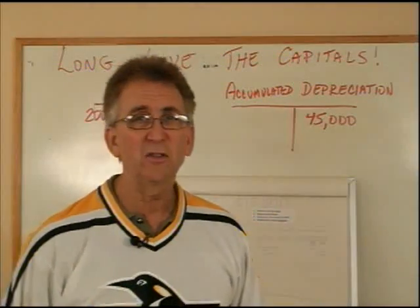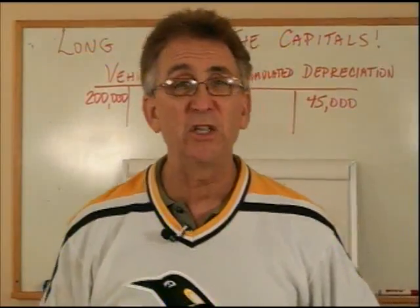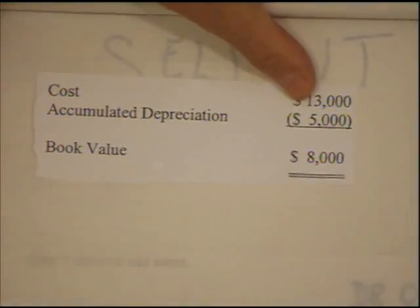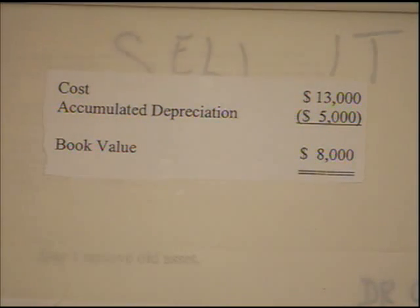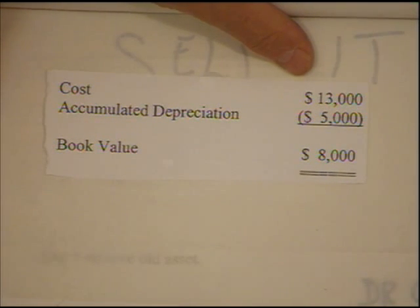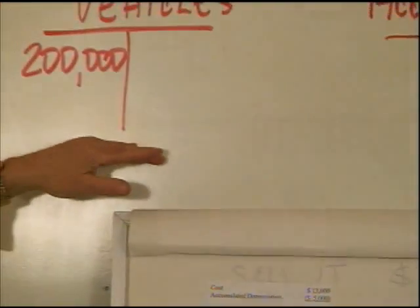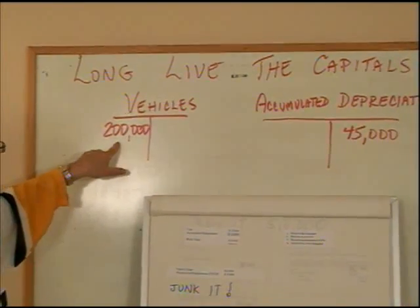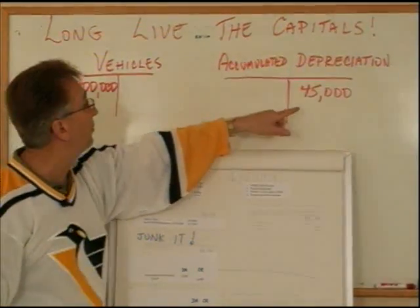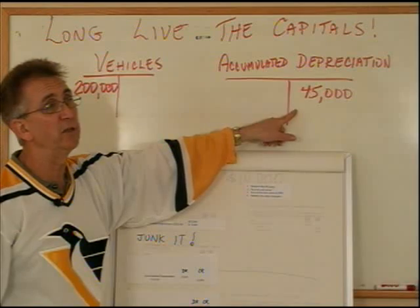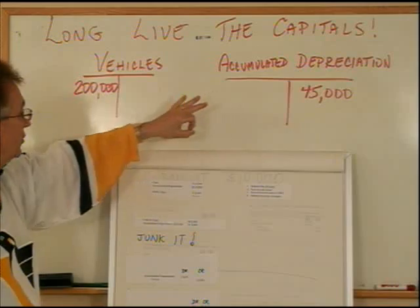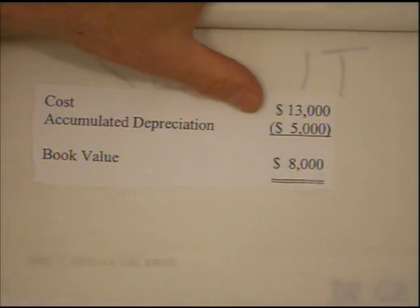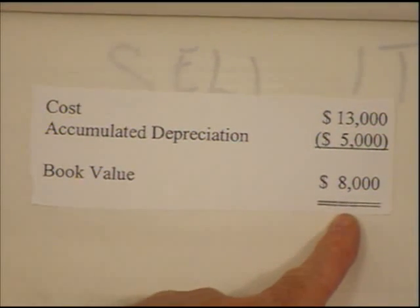Before we deal with that, we need to understand the numbers on that vehicle — what it's cost us and how much we've depreciated to date. Looking at our chart, we have a vehicle with $13,000 worth of cost and accumulated depreciation of $5,000. In our T-accounts, we have $200,000 worth of vehicles total, but one vehicle makes up $13,000 of that. On the accumulated depreciation side, we have $45,000 total, but one vehicle has $5,000 depreciated to date. So cost of 13 minus accumulated depreciation of 5 gives us a book value of $8,000.